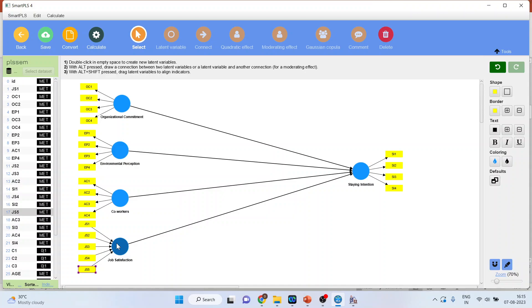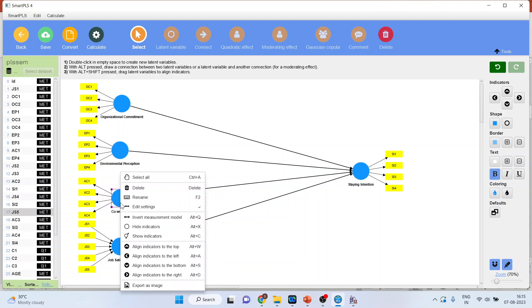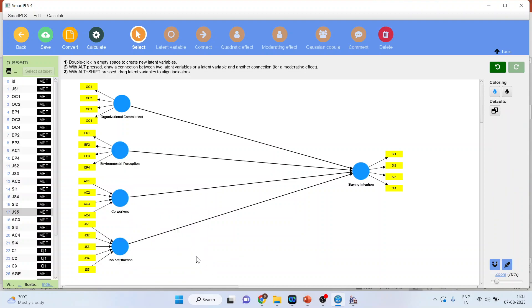Let's see that I invert this model. Here the arrows are moving inside and therefore this is your formative construct. So identify the formative construct and now count the number of arrows. There are 5 arrows, so 5 into 10 equals 50. The minimum sample size is 50. In case there are two formative constructs, then you will consider the construct on which the maximum arrows are loaded.